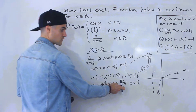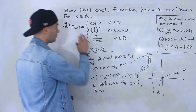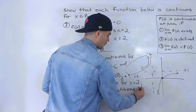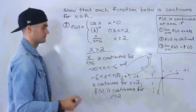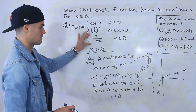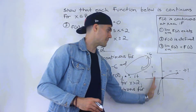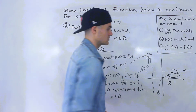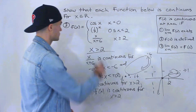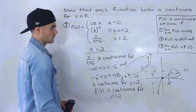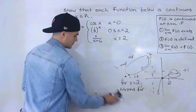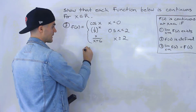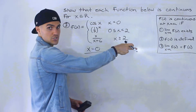The discontinuity happens at x = −6, but this piece of f(x) is only defined for x ≥ 2, which is always within the continuous region. So f(x) is continuous for x > 2. Now we can deal with the meeting points, starting with x = 0, going through the three continuity conditions.